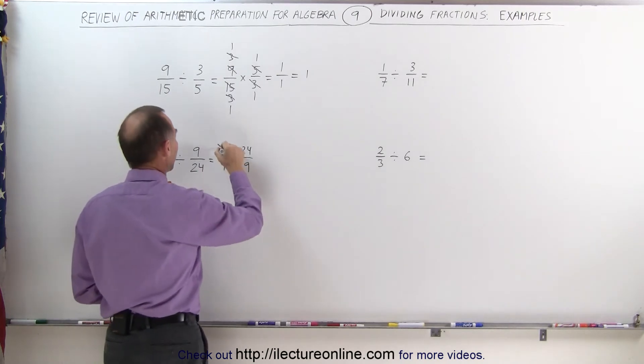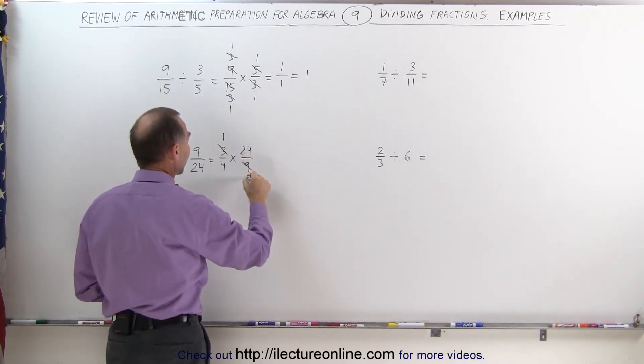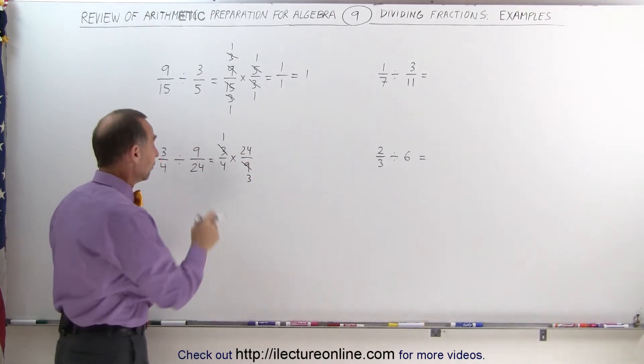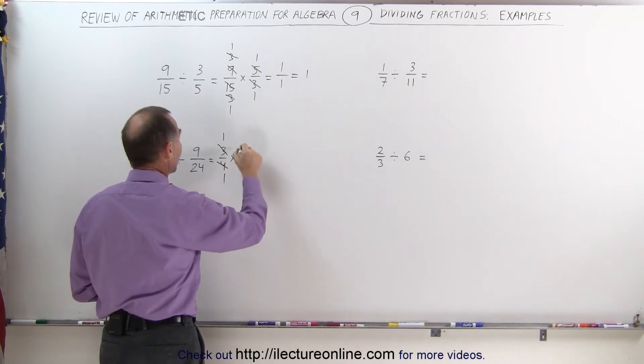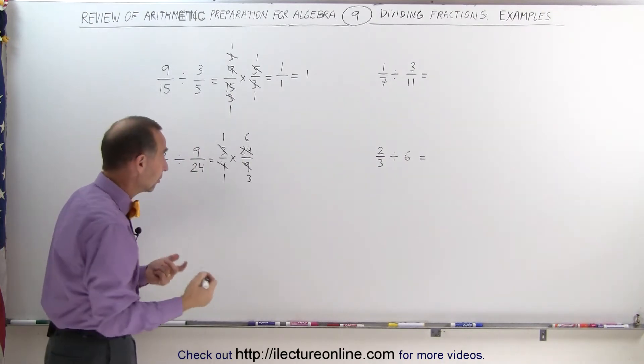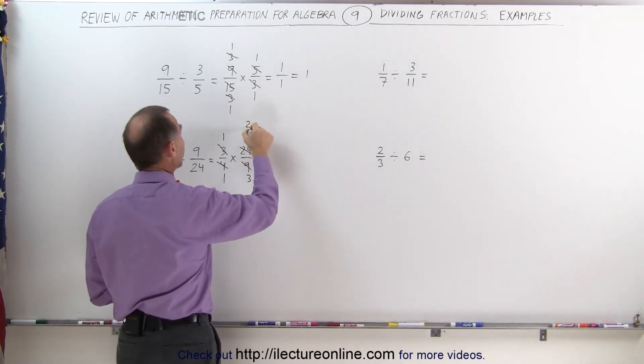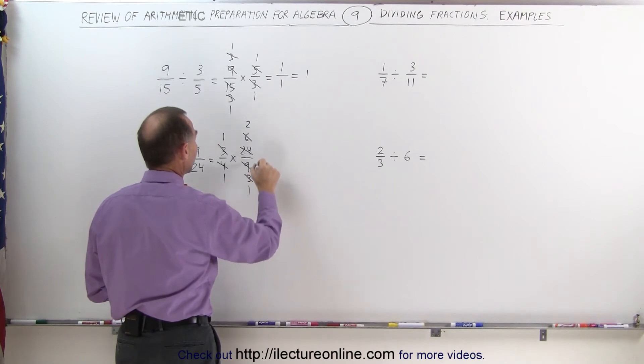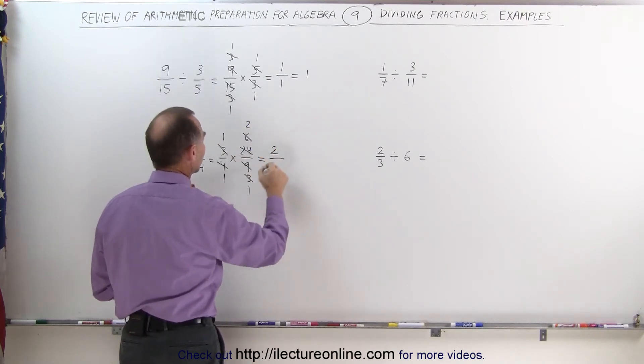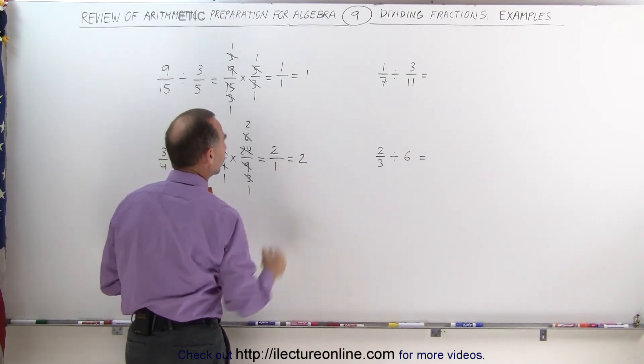3 and 9 are both divisible by 3, so 3 divided by 3 is 1, 9 divided by 3 is 3. 4 and 24, they can both be divided by 4. 4 divided by 4 is 1, 24 divided by 4 is 6. And now you can see 6 and 3, they can both be divided by 3. You can continue to simplify, 6 divided by 3 is 2, 3 divided by 3 is 1, and finally you can say 1 times 2 divided by 1 times 1, which is equal to 2.